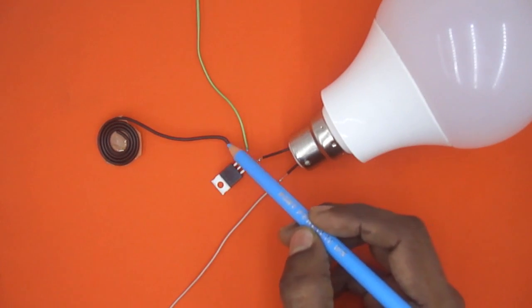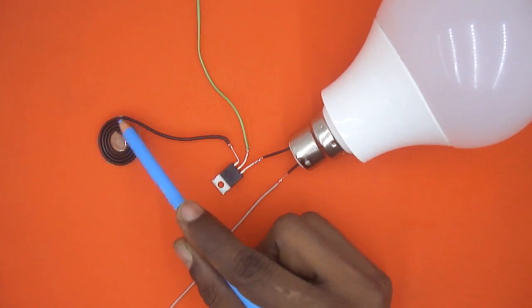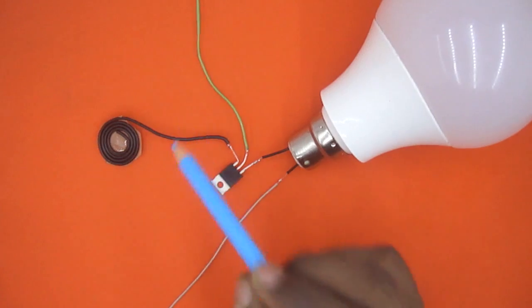On this gate pin, I have just connected one small wire and I have made a spiral thing on the other end.